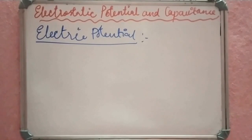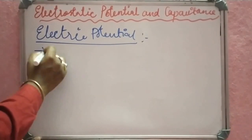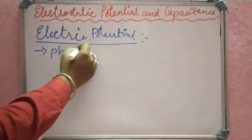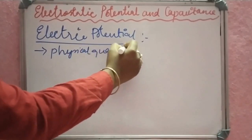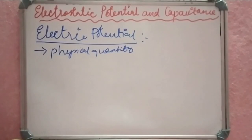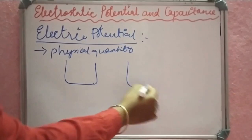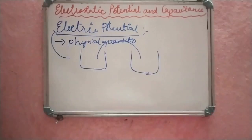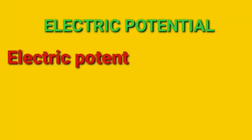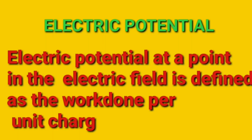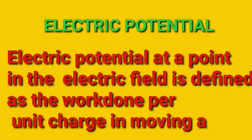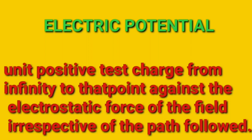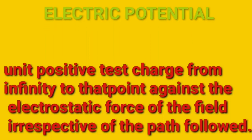First we are going to talk about electric potential. What is electric potential? The physical quantity determines the rate of flow of charge from one body to another body. Electric potential at a point in the electric field is defined as work done per unit charge in moving a unit positive test charge from infinity to that point against the electrostatic force of the field, irrespective of path followed.